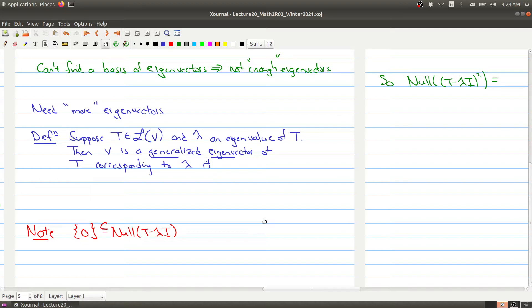Like an eigenvalue is fixed, suppose that T is your linear operator and you have an eigenvalue λ of T. Then v is a generalized eigenvector of T corresponding to this eigenvalue if what you require is that (T - λI)^j times v equals zero for some j greater than or equal to one.